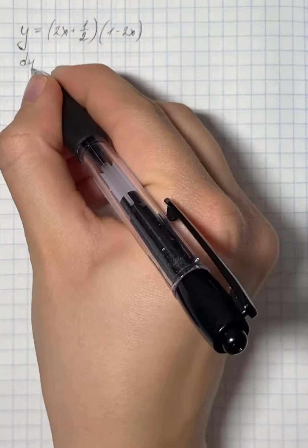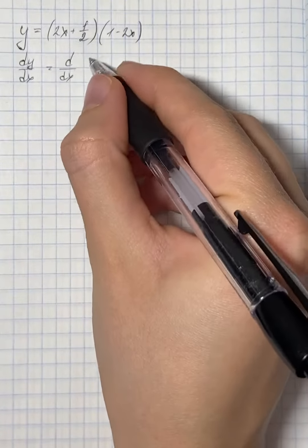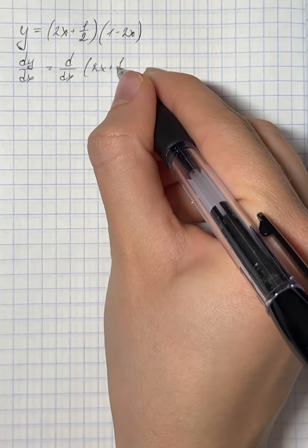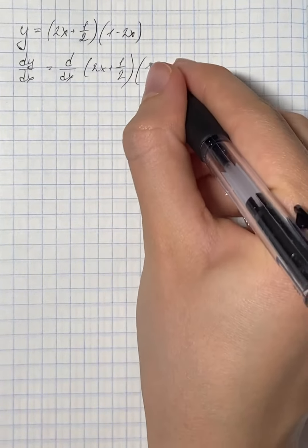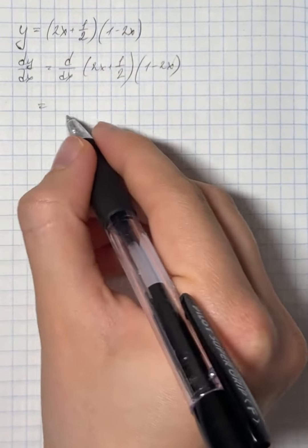So we have to find the derivative of a given function. That's the derivative of 2x plus 1 half times 1 minus 2x, and here we're going to use the product rule.